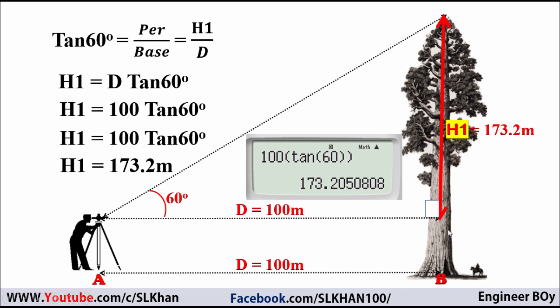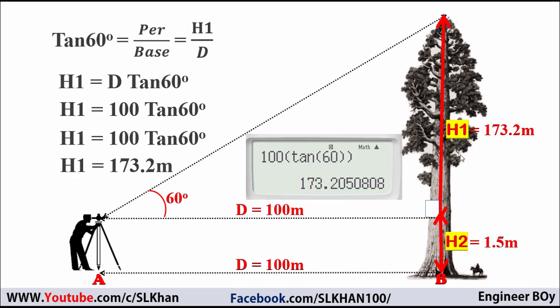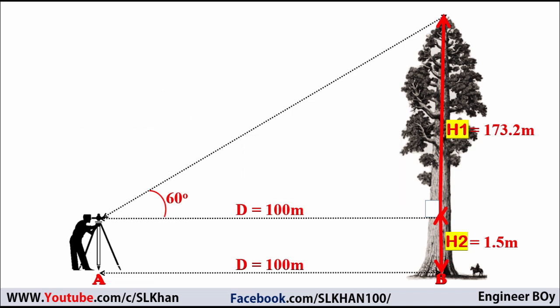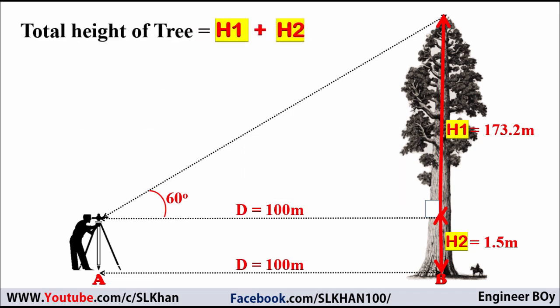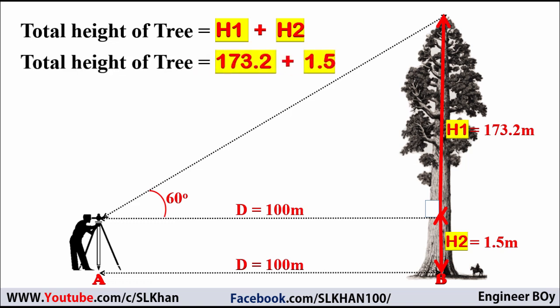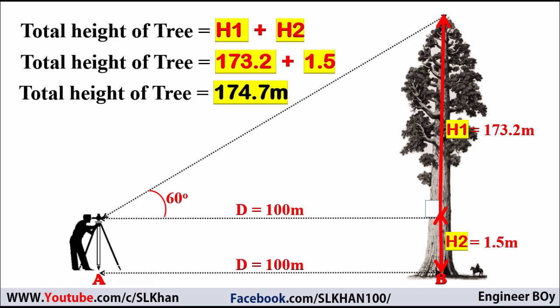We're not done yet because the small portion h2 is still remaining. We work out h2 using a measuring tape — it is simply the height of the instrument, which is easy to measure. So the total height of the tree is h1 plus h2, and since both are known, we can add them together. The total height of the tree is 174.7 meters.